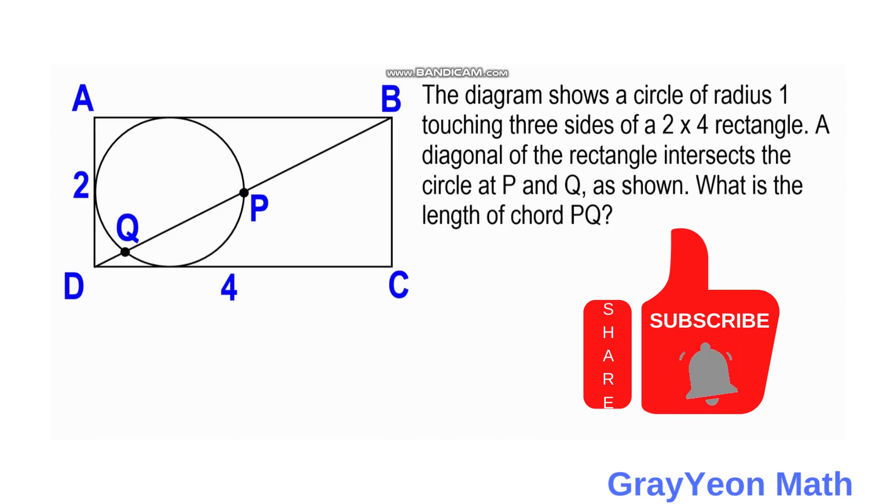Welcome to Gray Yeon Math. We are asked to solve this problem. The diagram shows a circle of radius 1 touching three sides of a 2 by 4 rectangle. A diagonal of the rectangle intersects the circle at P and Q as shown. What is the length of chord PQ?